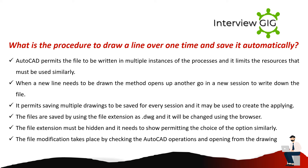What is the procedure to draw a line more than one time and save it automatically? AutoCAD permits the file to be written in multiple instances of processes, and it limits the resources that must be used. When a new line needs to be drawn, the method opens up a new session to write down the file. AutoCAD permits saving multiple drawings for every session. The files are saved using the file extension DWG, and it can be changed using the browser. The file extension must be appropriately set, and file modification takes place by checking the AutoCAD operations and opening from the drawing.